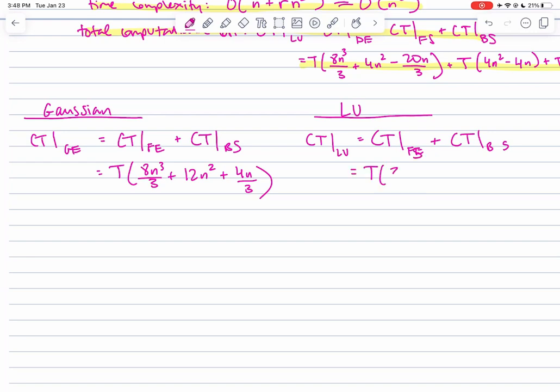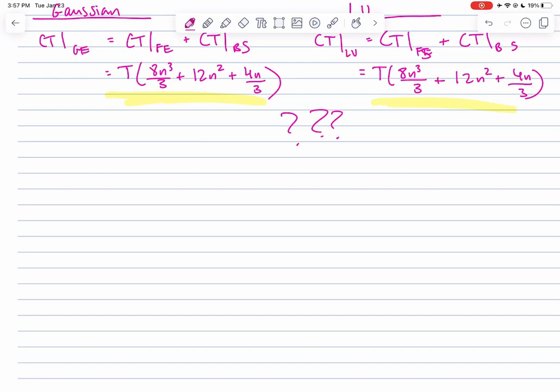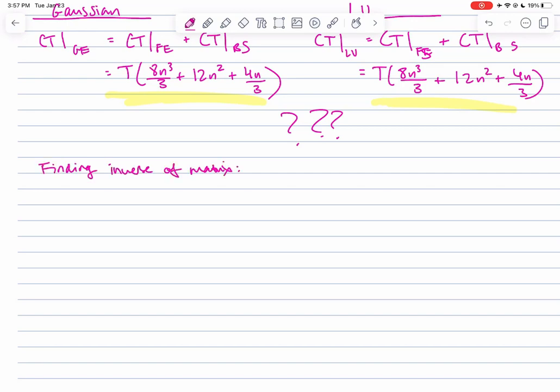An example of this to prove my final point that LU factorization is in fact more efficient is finding the inverse of a matrix using both algorithms.